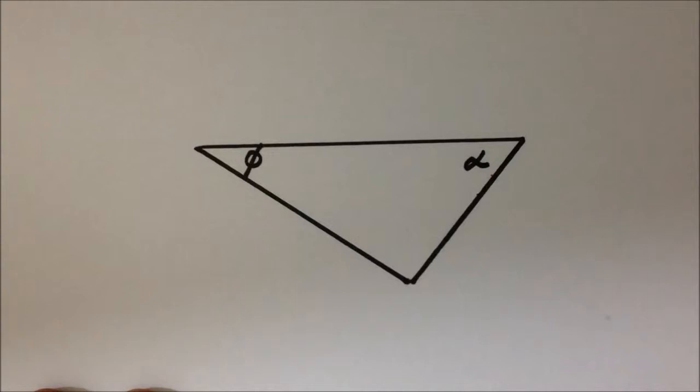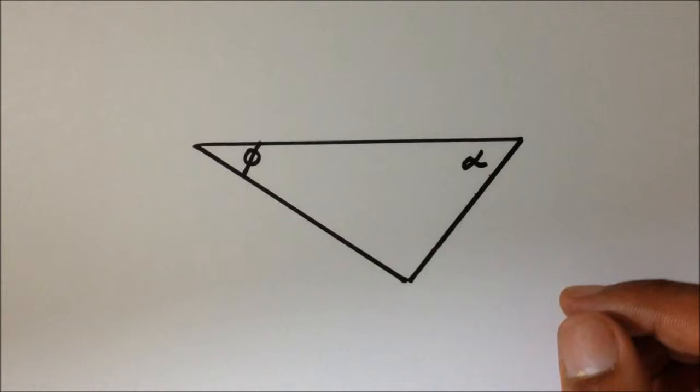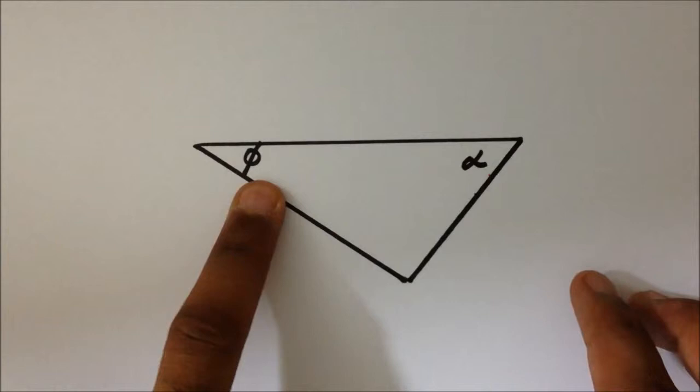Part B — this is a representation of the problem. I labeled the angles theta and alpha. You can label them whatever you want, but we must distinguish between these two because they are different. The angle theta given to us is 35 degrees, and the angle alpha is 48 degrees.